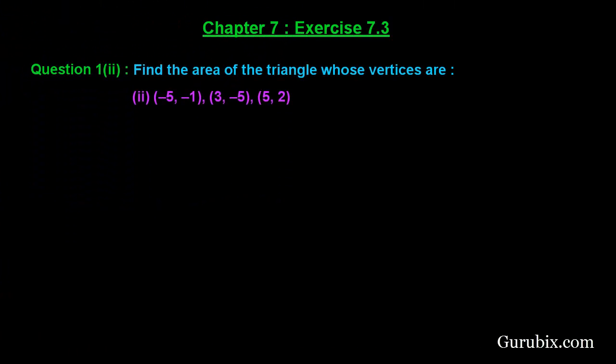Welcome friends, let us solve the second part of question number 1 of exercise 7.3 of chapter 7. The question says: find the area of the triangle whose vertices are (-5, -1), (3, -5), and (5, 2).